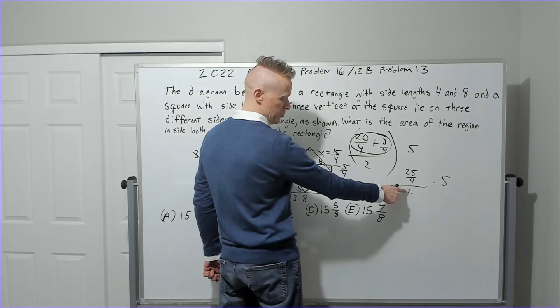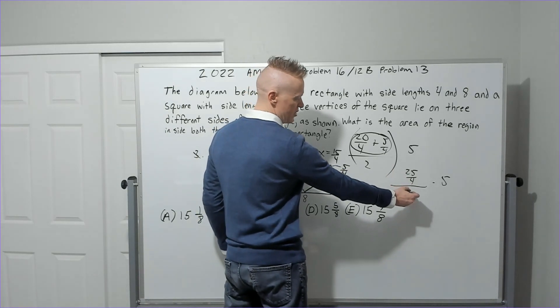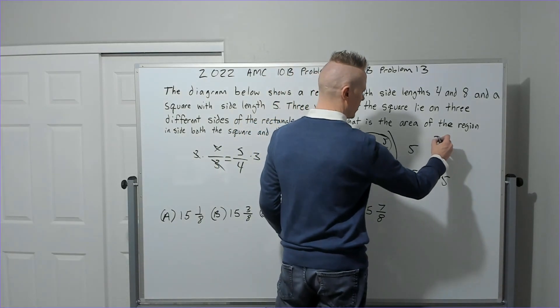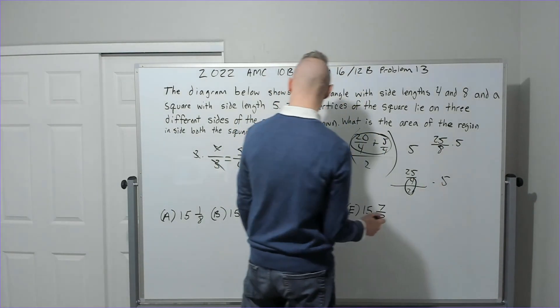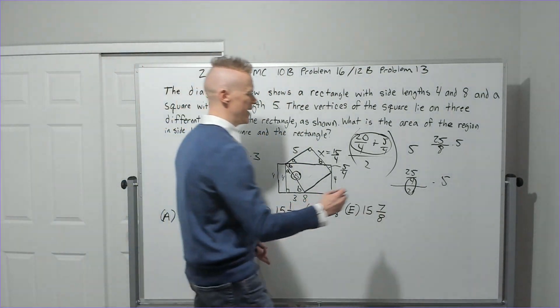Whenever you have a fraction with this single number down here, you can multiply these. So you're going to get 25 over 8 times 5 is 125 over 8.